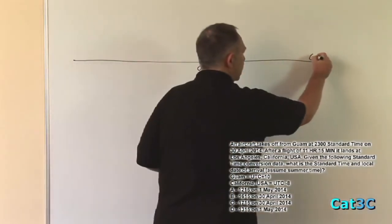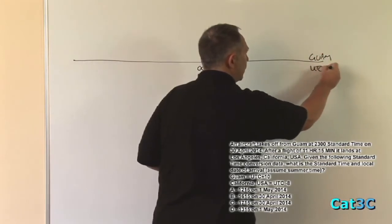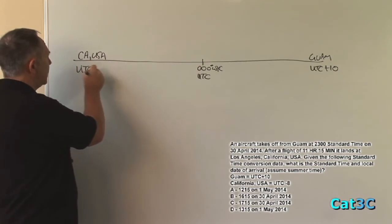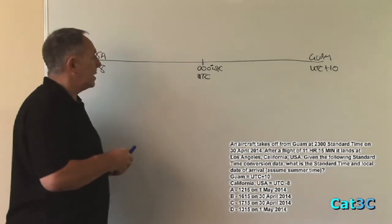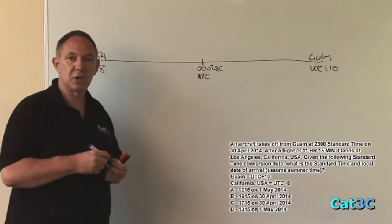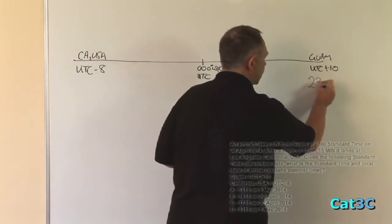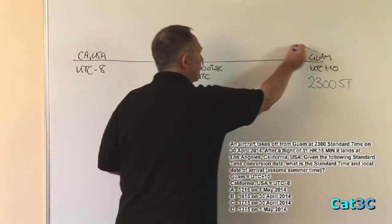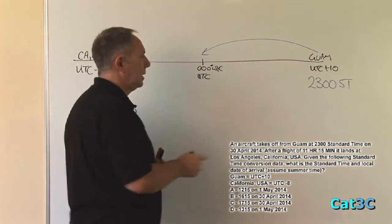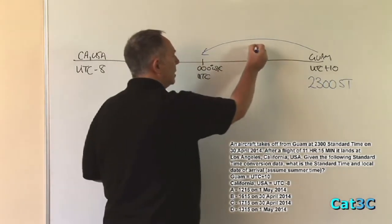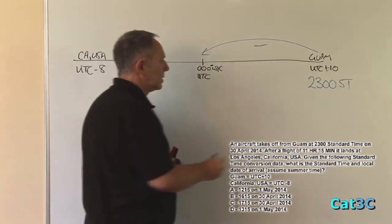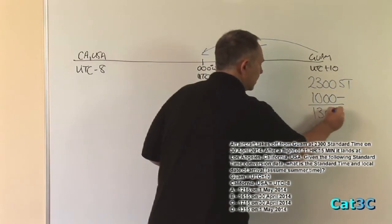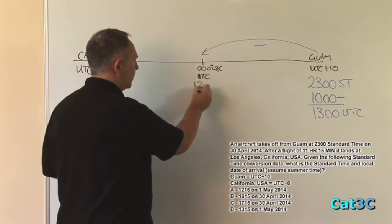We know that Guam is to the east, simply because it is UTC plus 10. Similarly, we know that California, USA, is to the west, because that is UTC minus 8. We start with a departure time at Guam of 2300 hours standard time. In order to take that to UTC, we need to make a correction from Guam to the Greenwich meridian. As we can see, that is in a right-to-left or westerly direction, and therefore we subtract the time. Subtract 10 hours from 2300 hours standard time, and it gives us 1300 UTC, which I will now transpose to this point.